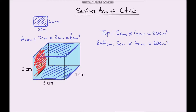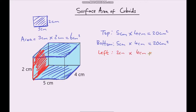So the area of this face here is going to be this length — 2cm — multiplied by that length there. Now that length is 4cm, which gives us 8cm².